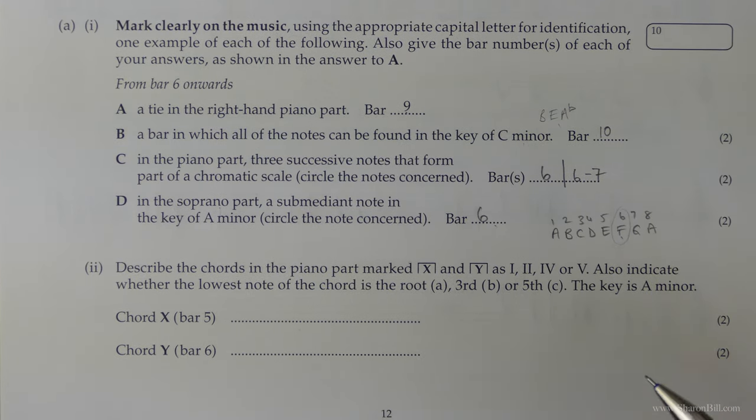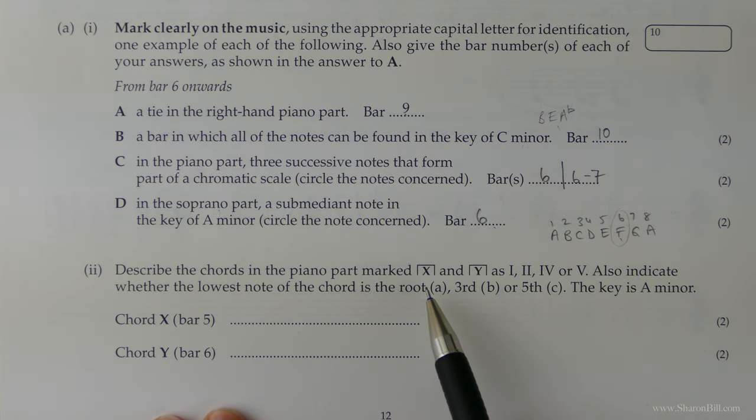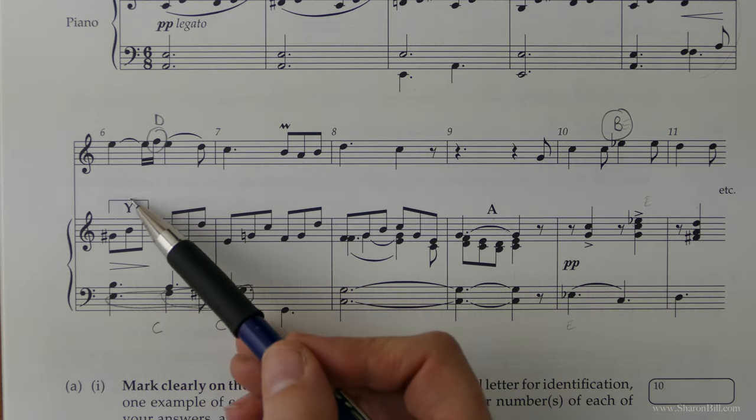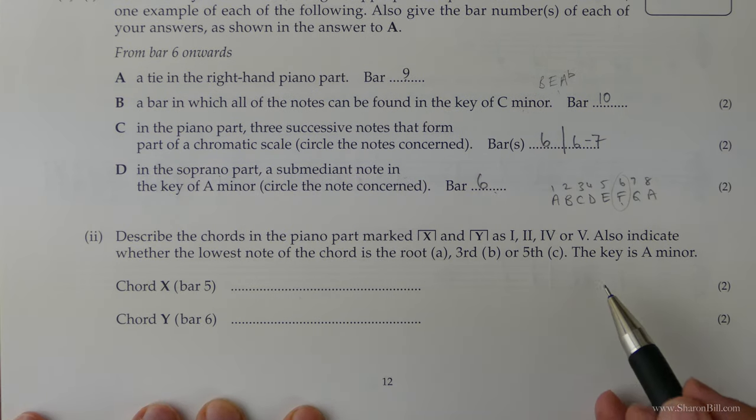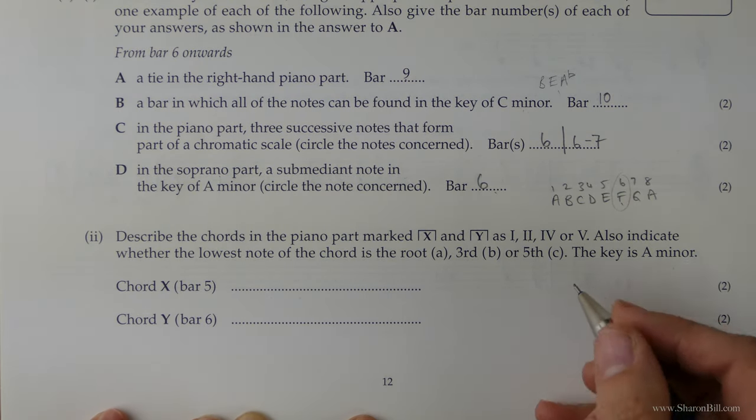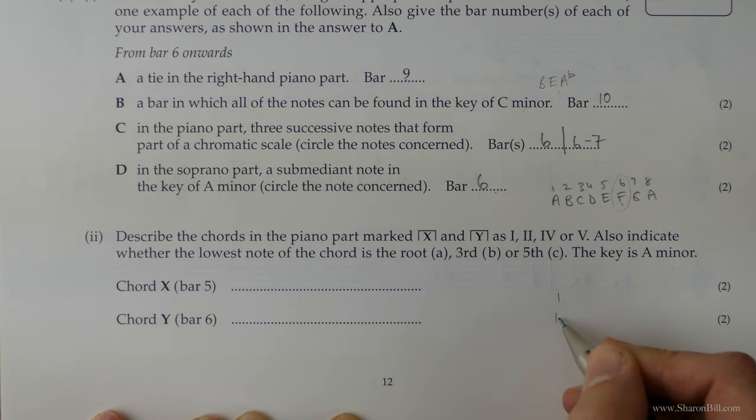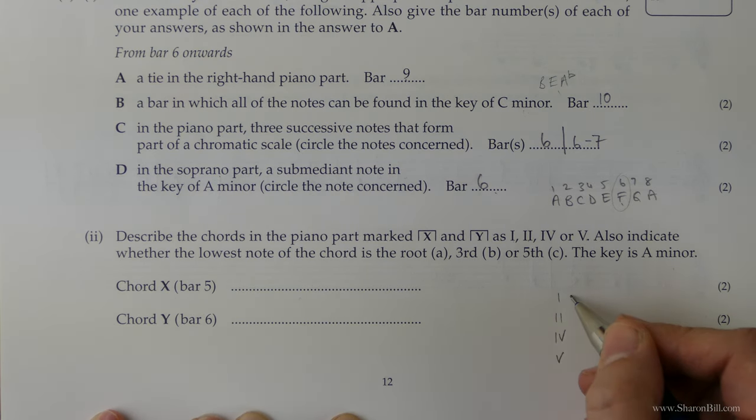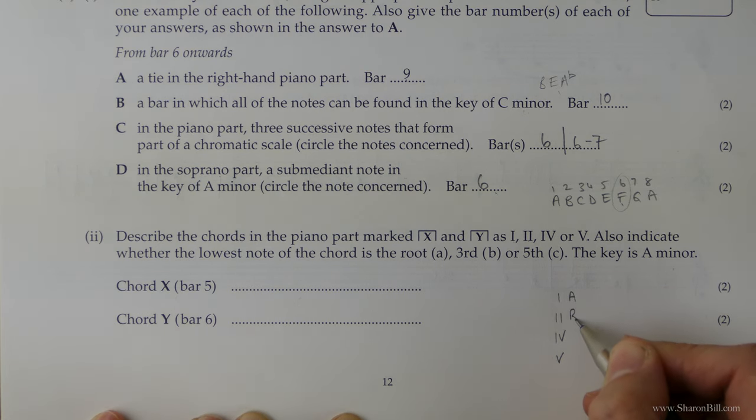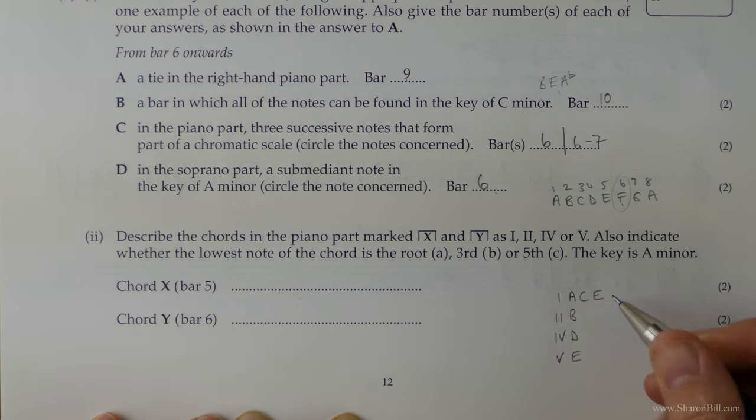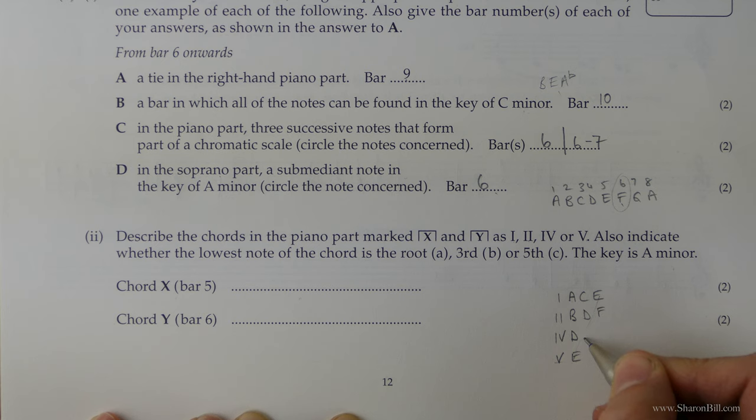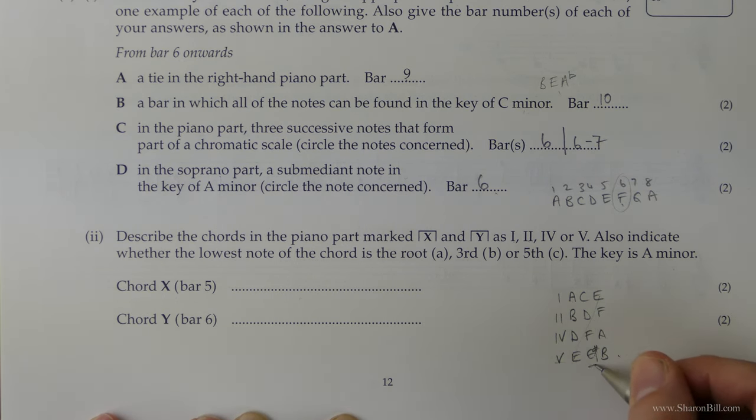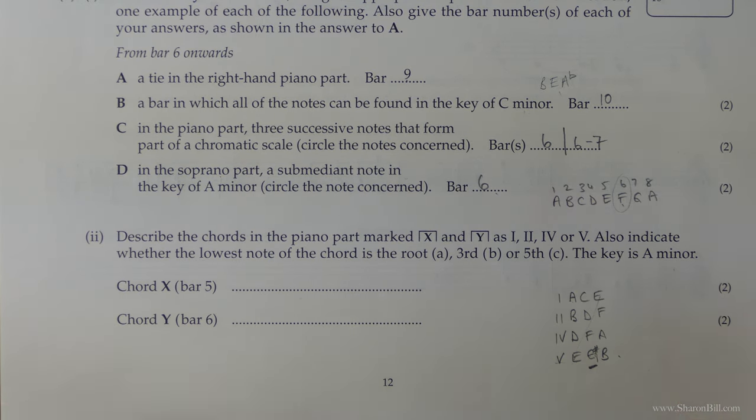Now then, we have a little bit of harmony now. So we need to describe the chords in the piano part marked X and Y. So we're looking at X and Y. We're told that we're in the key of A minor. We're looking for chords 1, 2, 4, and 5. So I'm just going to sketch out what it is we're actually looking for first of all. 1, 2, 4, and 5. So if we're in A minor, the root is A, the second is B, C, D is 4, E is 5. And now we build up the triad. So the first, the third, and the fifth. A, C, E. Now remember in A minor, we raise the seventh, and so we'll be looking for a G sharp there. That always comes in the middle of chord V.